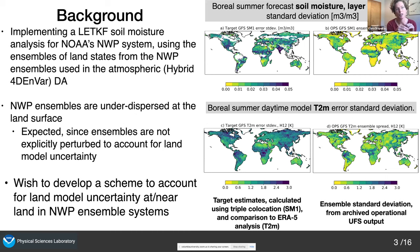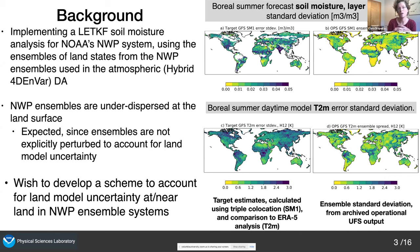The reason I was doing this work is that I'm in the process of implementing an LETKF soil moisture analysis for our NWP system. The LETKF is applied directly to the ensemble of land states from our NWP ensemble that we use in the atmospheric DA — essentially a weakly coupled example. One of the issues is that our ensembles are under-dispersed at and near the land surface. This isn't a surprise because these ensembles are generated for the atmospheric assimilation update and don't currently include any mechanism to account for land model uncertainty. In offline land DA, we typically perturb the atmospheric forcing and also add perturbations to land prognostics or parameters — this second aspect is currently missing from our NWP ensembles.